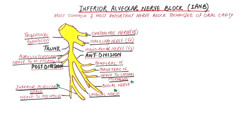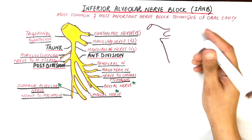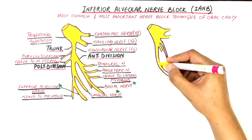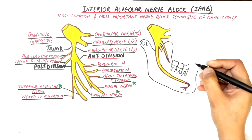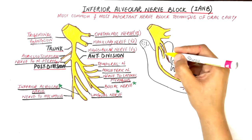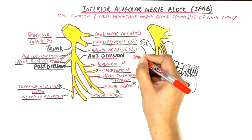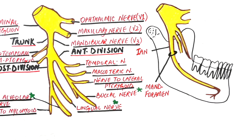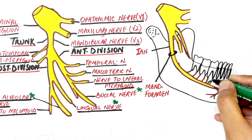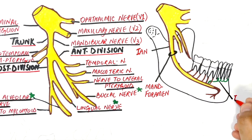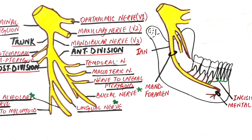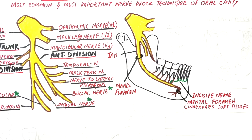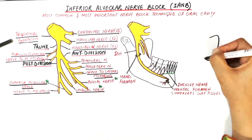Let's now look at the course of the inferior alveolar nerve. After branching from the posterior division of the trigeminal nerve, it enters the lower jaw through the mandibular foramen and then the mandibular canal. Within the mandibular canal, the nerve gives off branches to the molar teeth and, as it progresses forward, gives off another branch named the incisive branch, which innervates the lower premolars, canine, and incisors. The inferior alveolar nerve then exits the lower jaw through the mental foramen and is now named the mental nerve, which innervates the soft tissues of the chin area.